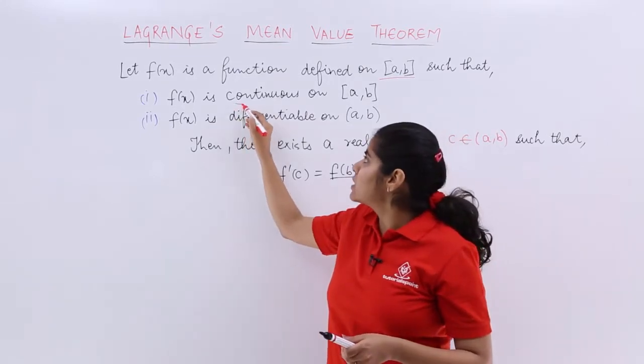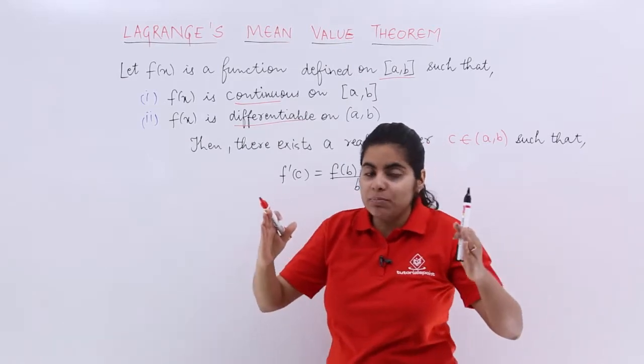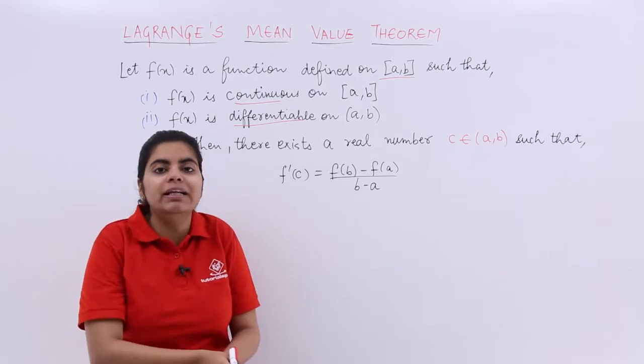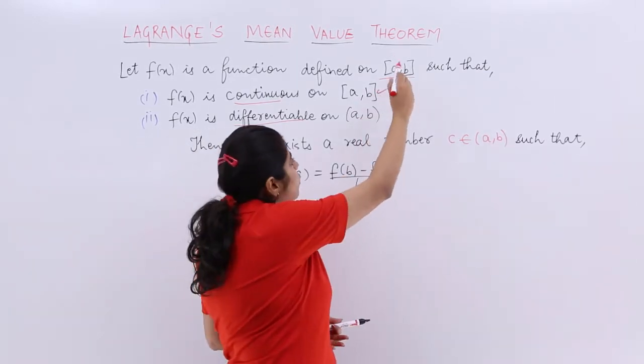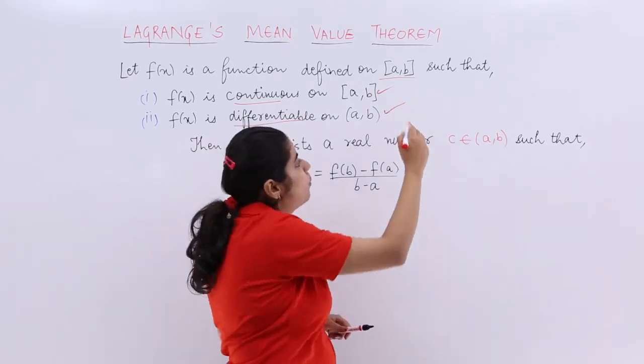The first condition is that f(x) is continuous, and the second is that f(x) is differentiable. What's important is not only that it's continuous and differentiable, but on which intervals. It is continuous on the closed interval [a,b] and differentiable on the open interval (a,b).